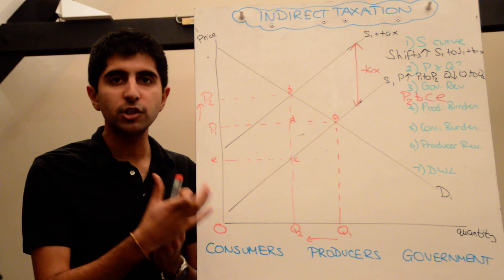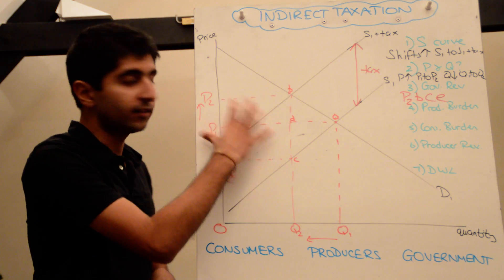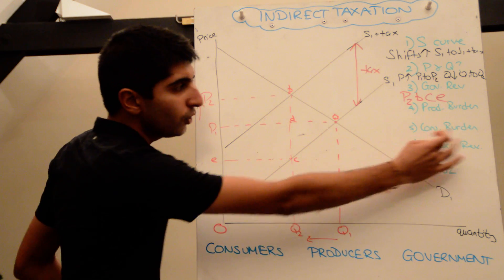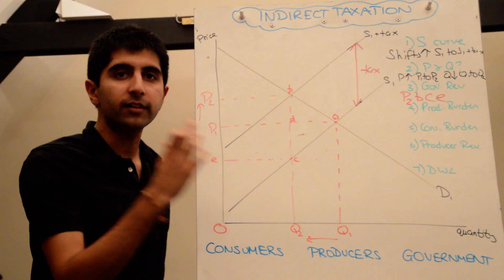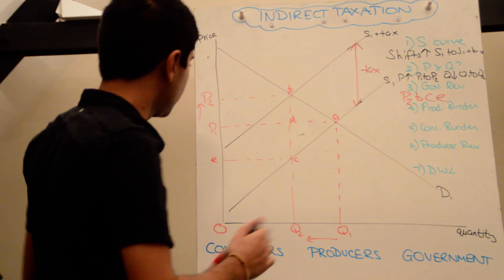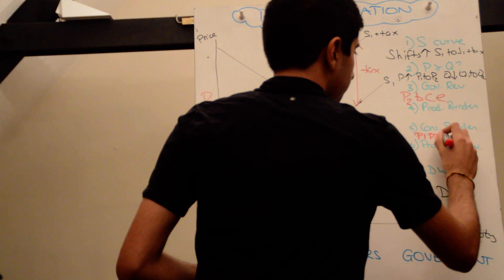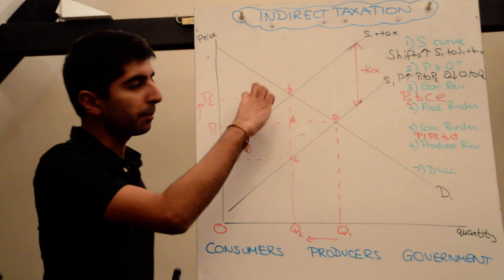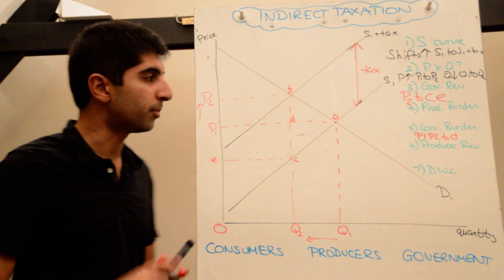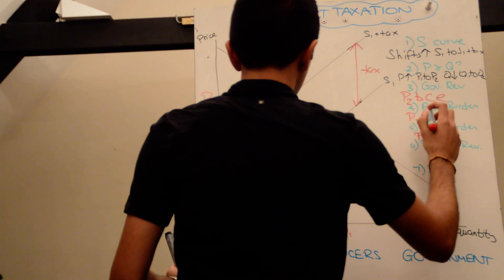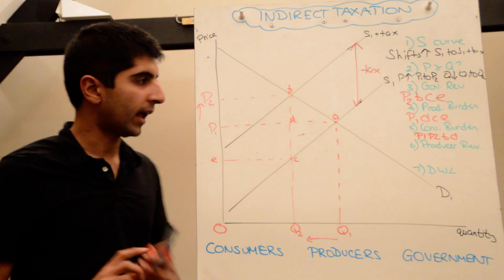We can also work out how much the producer and consumer are suffering as a result of this tax. The consumer pays the difference in price. Price has increased from P1 to P2, so that part of the rectangle is being paid by the consumer. The consumer is paying P1, P2, B, D. This top part of the rectangle is the consumer burden, which means the rest has to be paid for by the producer. That is P1, D, C, E.